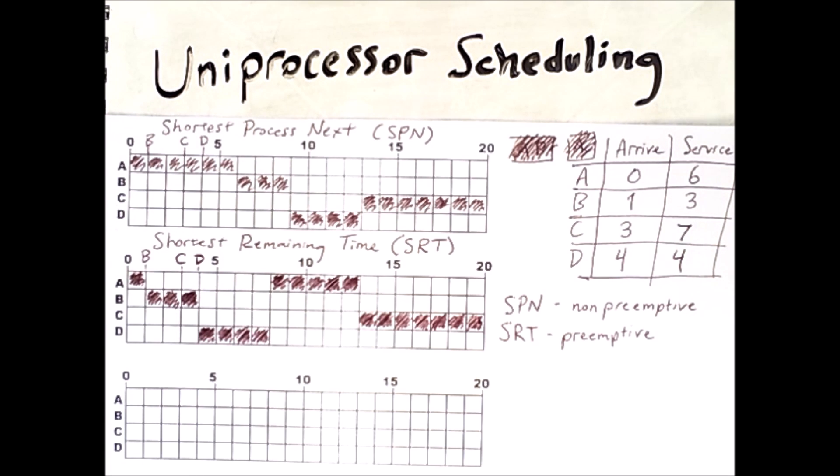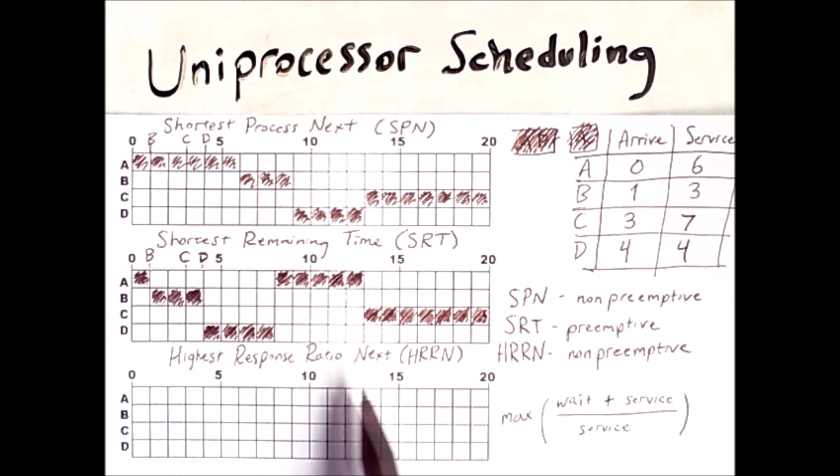So an approach that solves this is the Highest Response Ratio Next algorithm. Highest Response Ratio Next is a non-preemptive algorithm that is similar to these two but avoids starvation.